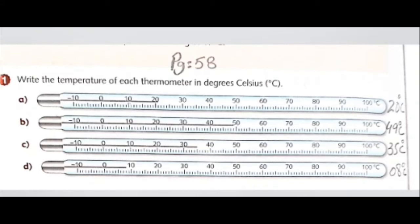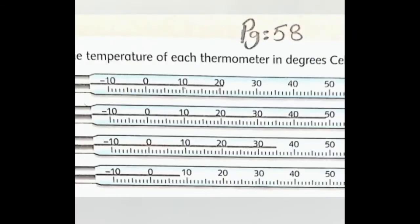We will read the thermometer, then write down the temperature. We can see that there is a line, and we will read the line to the end. First, it is 20 degrees. In the second, the line is at 49.